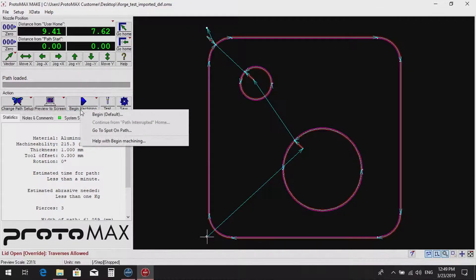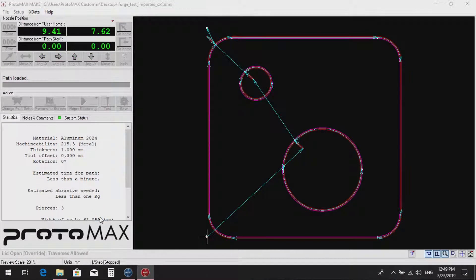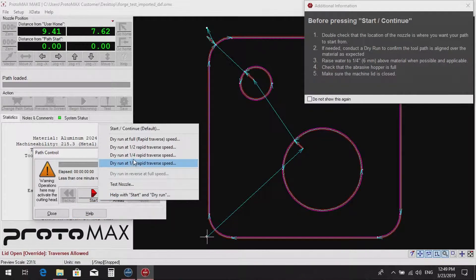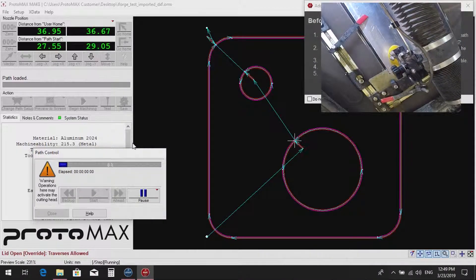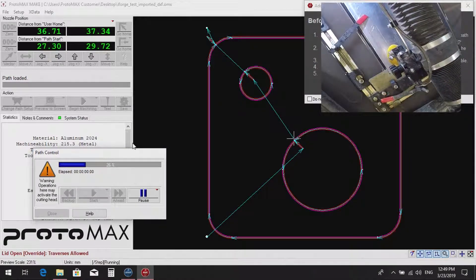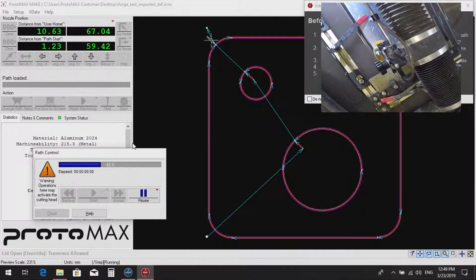Left click begin machining, then right click start and select dry run. Half or quarter speed should be used if the operation is complex or small. The machine now will follow the path of the nozzle without starting the water jet.